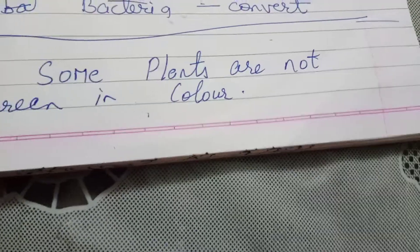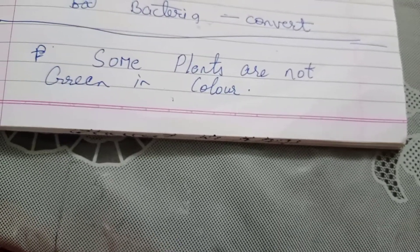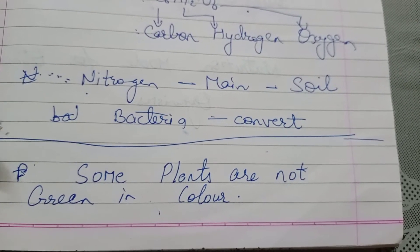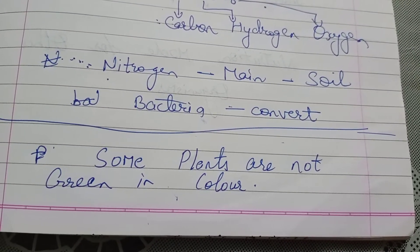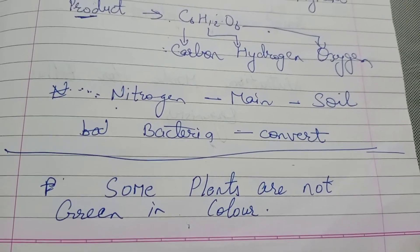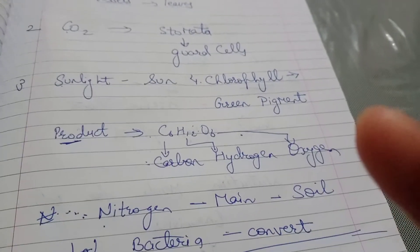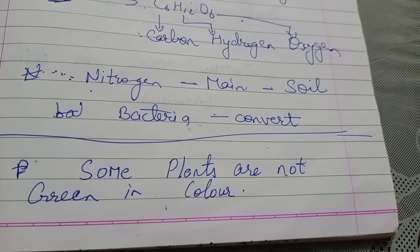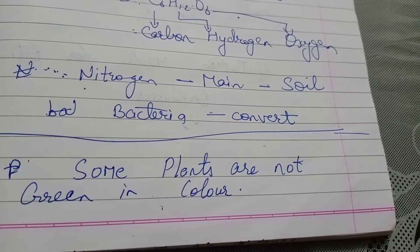Some plants which are not green in color still perform the process of photosynthesis. Listen carefully — some plants have leaves which are not green in color. Such leaves contain chlorophyll, but it is masked due to the presence of other colorful pigments. They have the green pigment, but on top of it there is a mask of other colorful pigments such as red and purple. Still, they can perform the process of photosynthesis. So even if plants are not green in color, they perform photosynthesis because the chlorophyll is masked by colorful pigments.